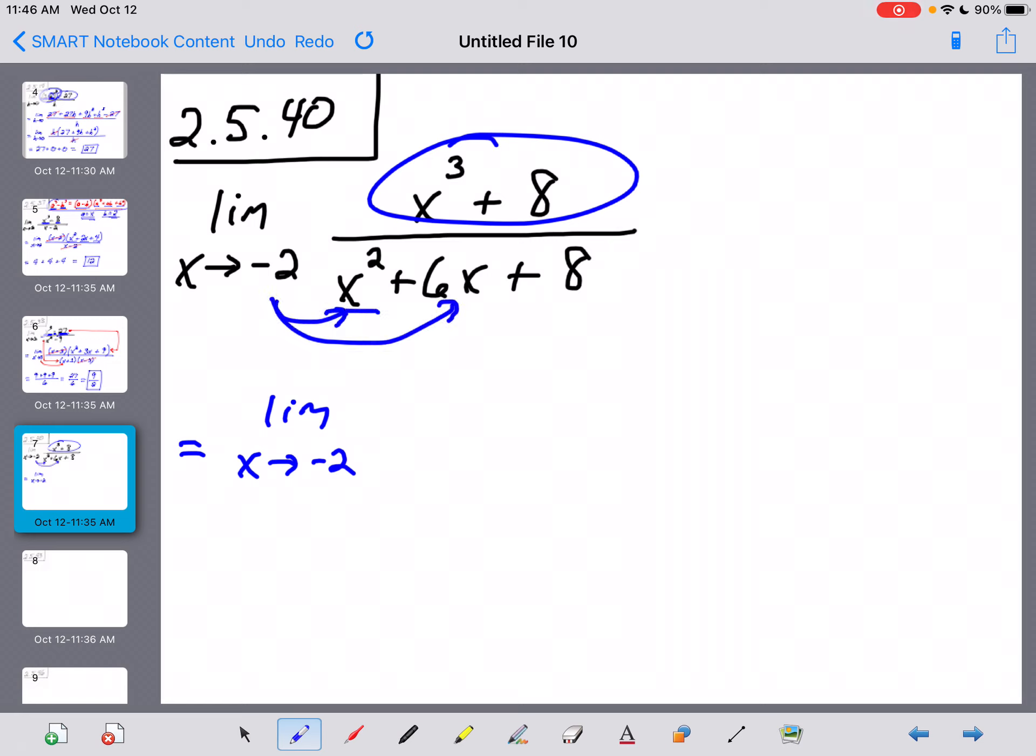Probably nothing good. Negative 2 squared is 4. 6 times negative 2 is negative 12. So 4 minus 12 is negative 8 plus 8. Sure enough, that gets a 0. Not surprising. Let's see what we can do then.